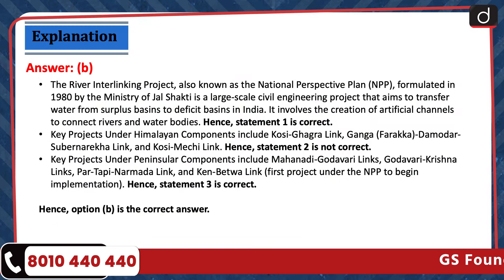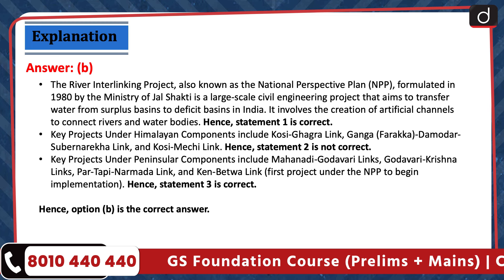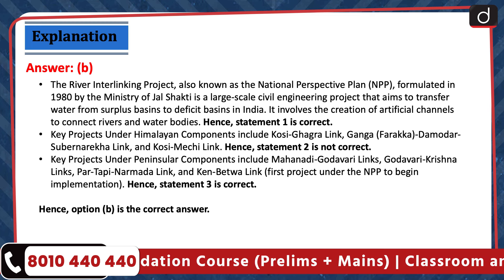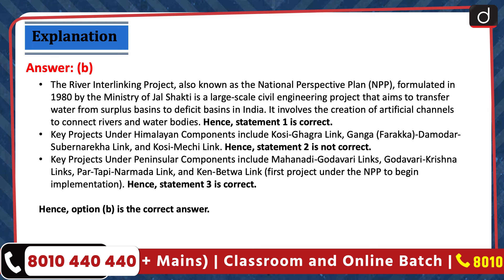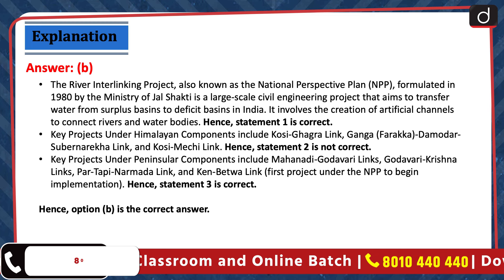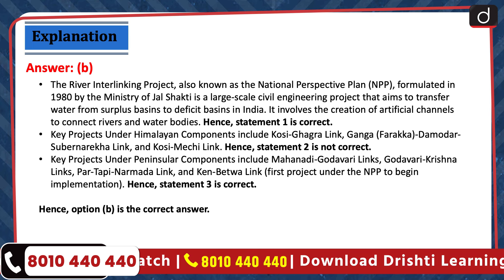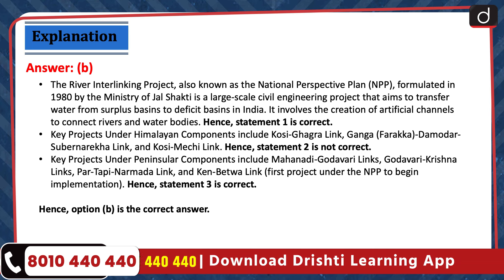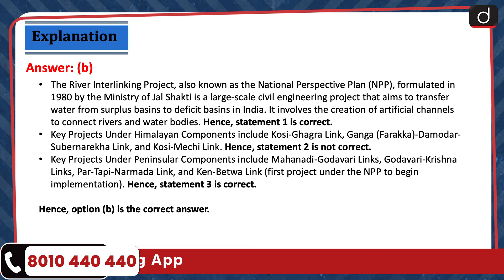The River Interlinking Project, also known as the National Perspective Plan, formulated in 1980 by the Ministry of Jal Shakti, aims to transfer water from surplus basins to deficit basins in India through the creation of artificial channels. Hence, statement 1 is correct. Projects under Himalayan components include Kosi-Ghagra Link, Ganga-Damodar-Suban-Rekha Link, and Kosi-Mechi Link — not the Kosi-Yamuna Link. Hence, statement 2 is not correct. Projects under Peninsular components include Mahanadi-Godavari Links, Godavari-Krishna Links, Par-Tapir-Narmada Link, and Kain-Bethwa Link. Hence, statement 3 is correct. Option B is the correct answer.